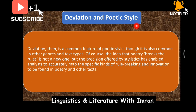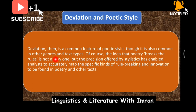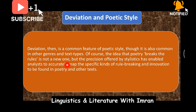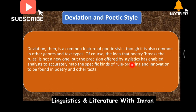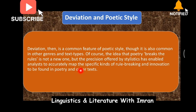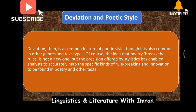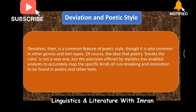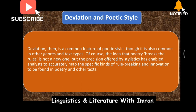Deviation and poetic style: Deviation is a common feature of poetic style, though it is also common in other genres and text types. The idea that poetry breaks the rules is not a new one, but the precision offered by stylistics has enabled analysts to accurately identify specific kinds of rule-breaking and innovation found in poetry and other texts — technically and objectively showing where rules have been broken.